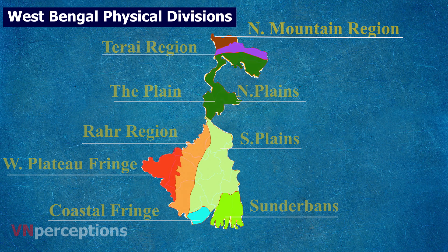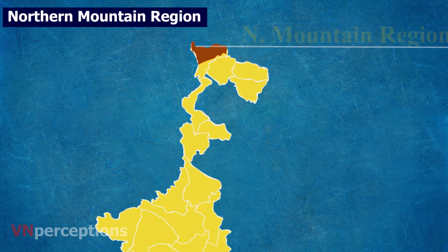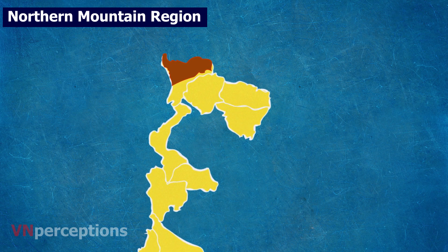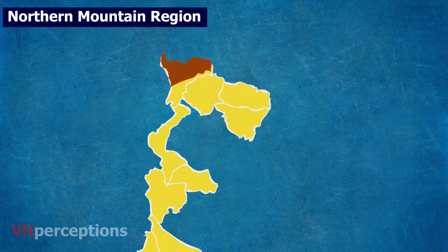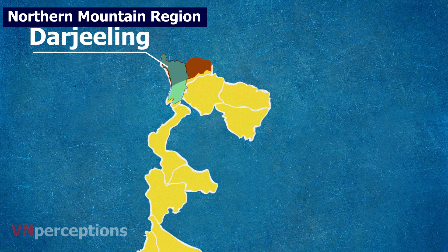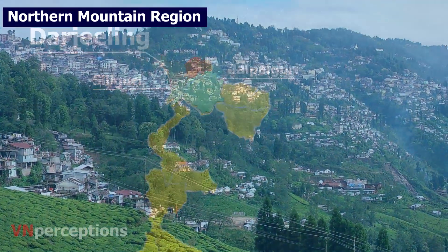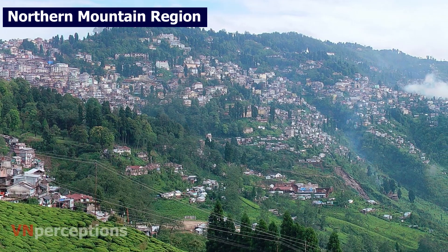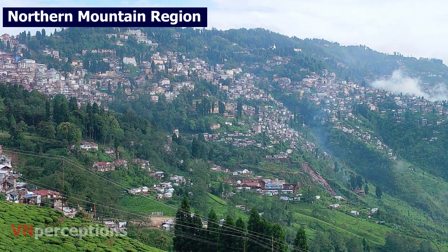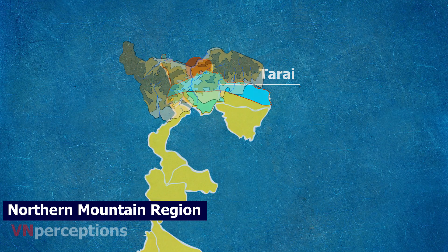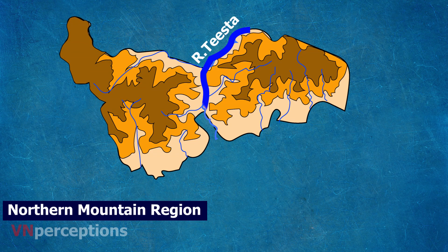The northern mountain region is situated on the northwestern part of West Bengal and belongs to the eastern Himalayan range. This region covers the whole of the Darjeeling district except the Siliguri division, and a narrow part in the northern part of Jalpaiguri district. This region consists of sedimentary and metamorphic rocks. This area suddenly increases its slope from the Tarai region. The deep gorge formed by the Tista river has divided this mountainous region into two parts.